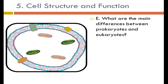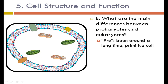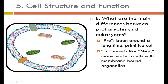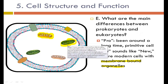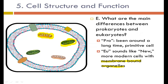Differences between prokaryotes and eukaryotes: 'Pro' implies a primitive, simple cell that has been around a long time. A eukaryote — 'u' sounds like 'new' — is a more modern cell with membrane-bound organelles. Since this cell has mitochondria and chloroplasts that are all membrane-bound, it is a eukaryotic cell.